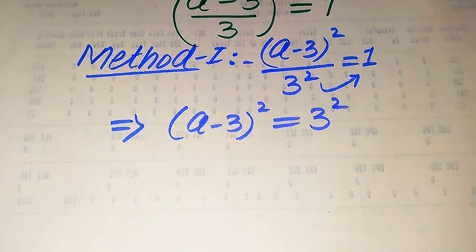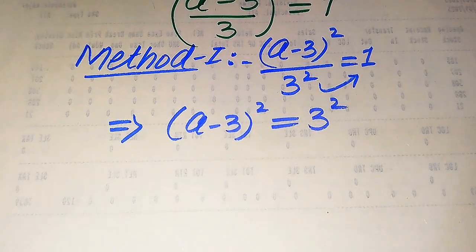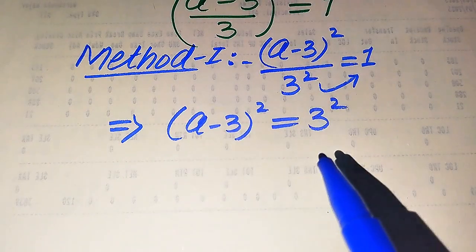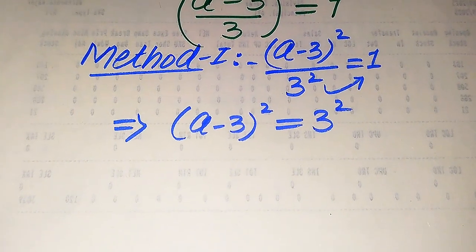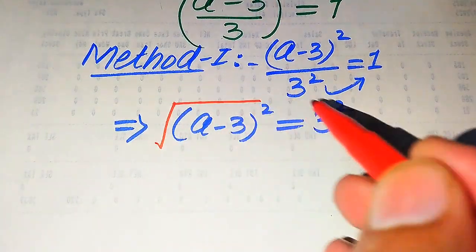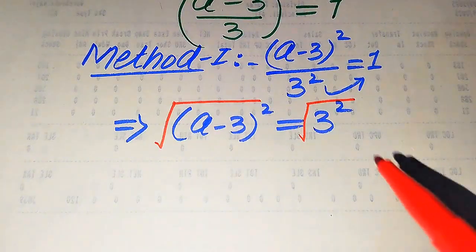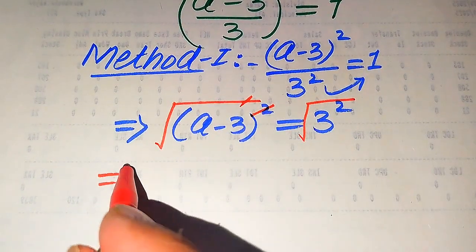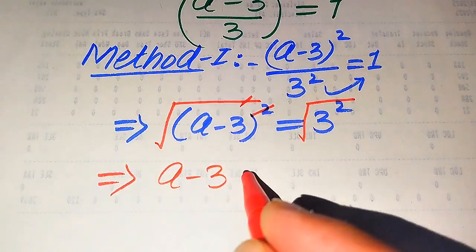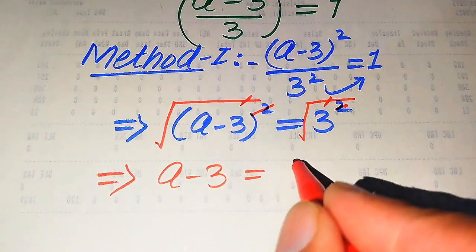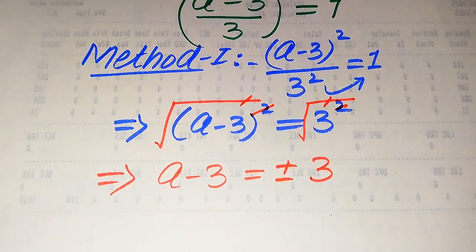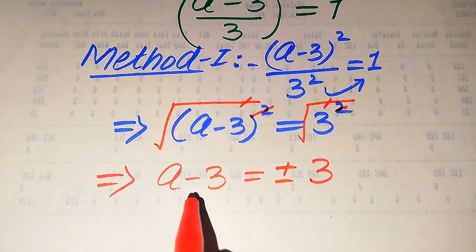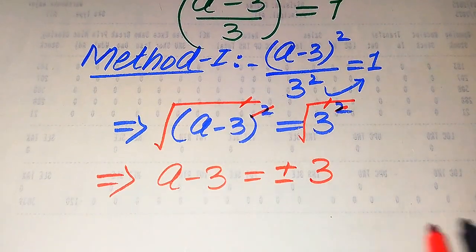There are many methods to solve further for the values of a, but here we will use the square root technique to find the roots of this equation. We take a square root on both sides. The square and square root cancel, giving us a minus 3 equals plus or minus 3, since when we apply the square root to both sides we write a plus-minus sign on one side.